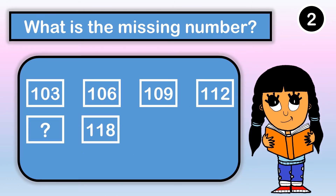Let's try another one. What is the missing number? One hundred three, one hundred six, one hundred nine, one hundred twelve, then our missing number, and last, one hundred eighteen. It looks like I am skip counting by three, so my missing number is one hundred fifteen.